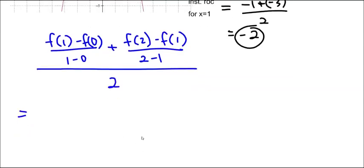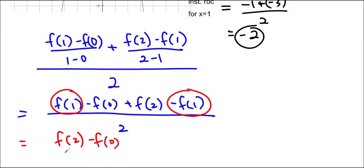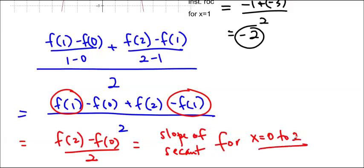And if you look at this, this is actually, okay, so these are both over 1. So we get f of 1 minus f of 0 plus f of 2 minus f of 1 over 2. And if you can see it, actually we've got a f of 1 minus f of 1. So this becomes f of 2 minus f of 0 over 2. This is the slope of the secant for x equals 0 to 2. So what I just did actually was find the slope of the secant from 0 to 2.